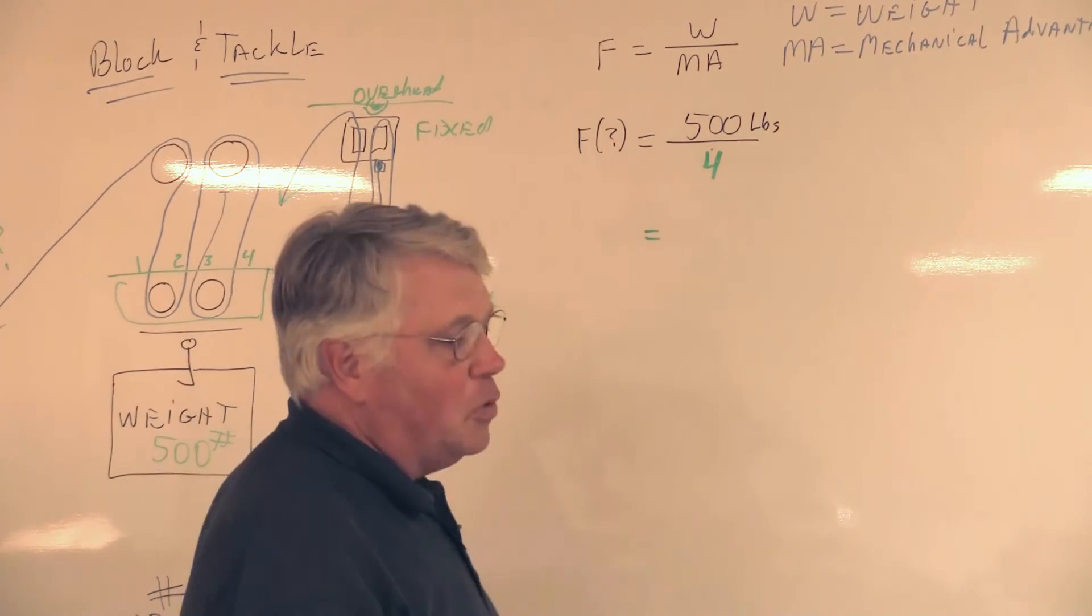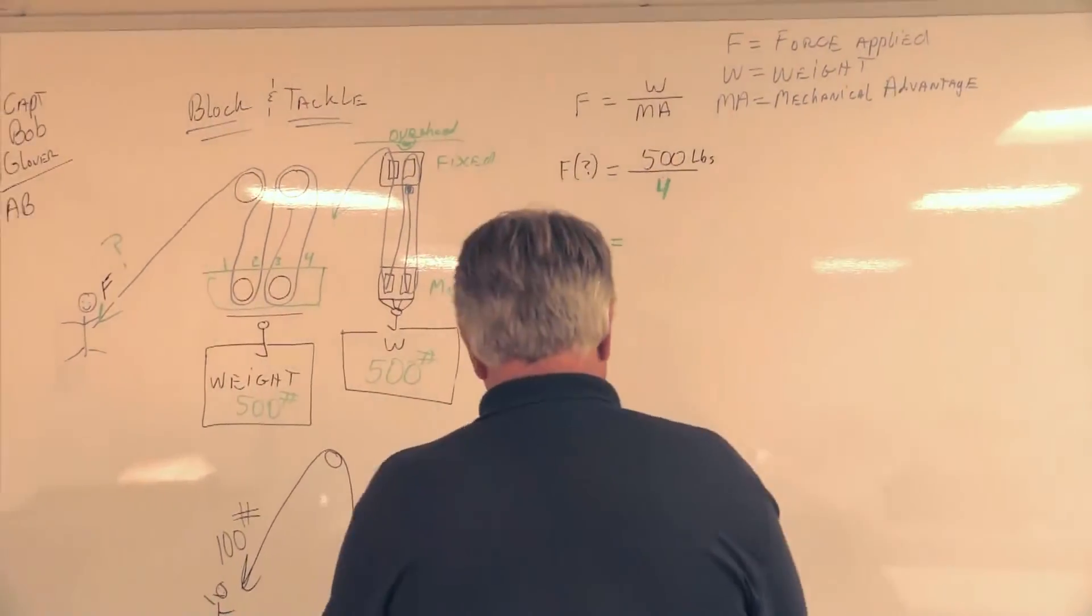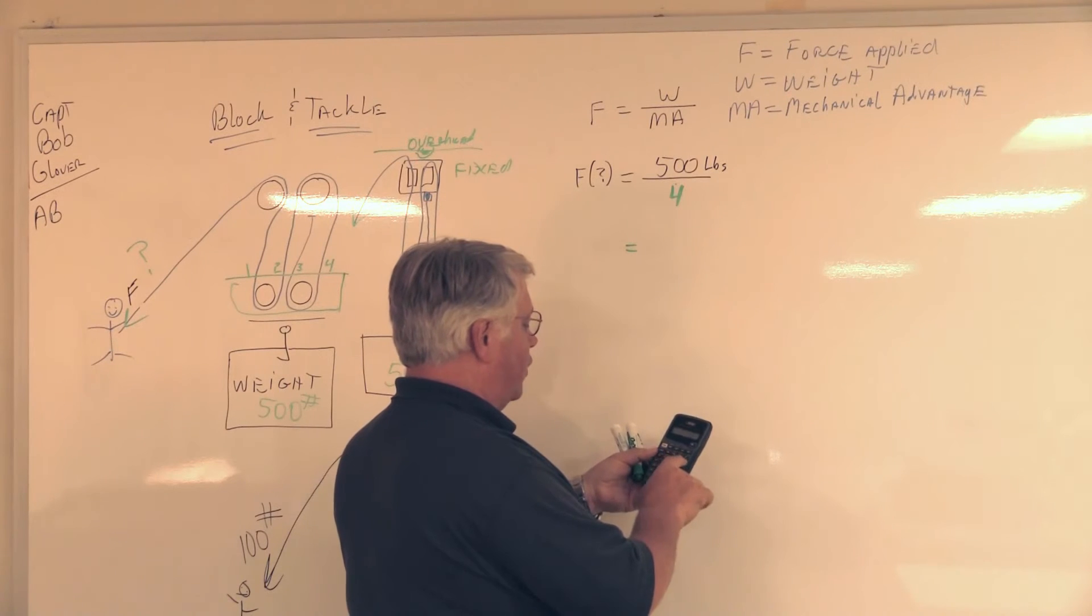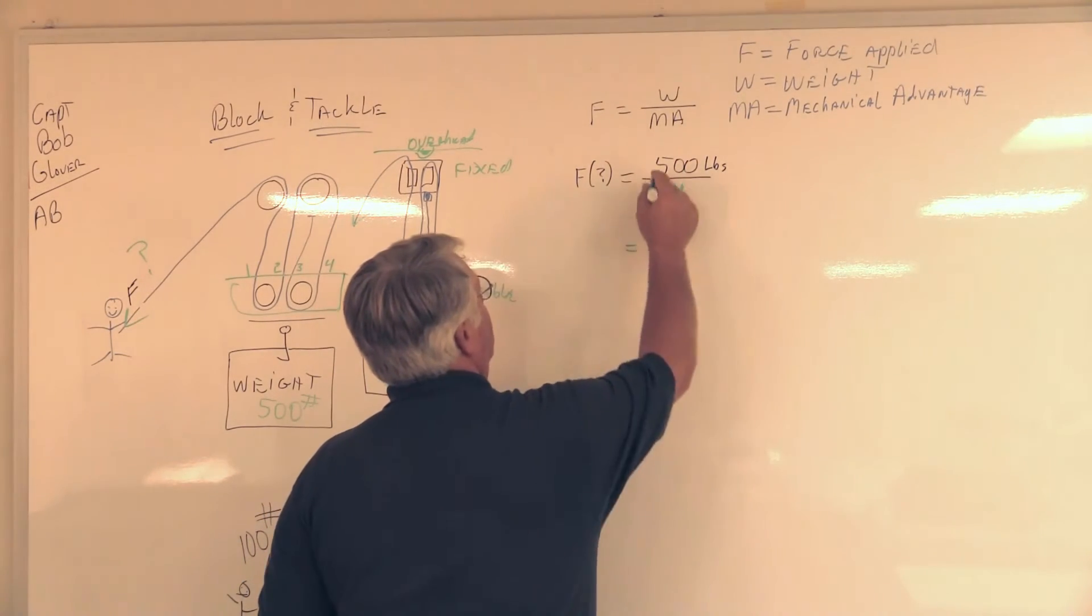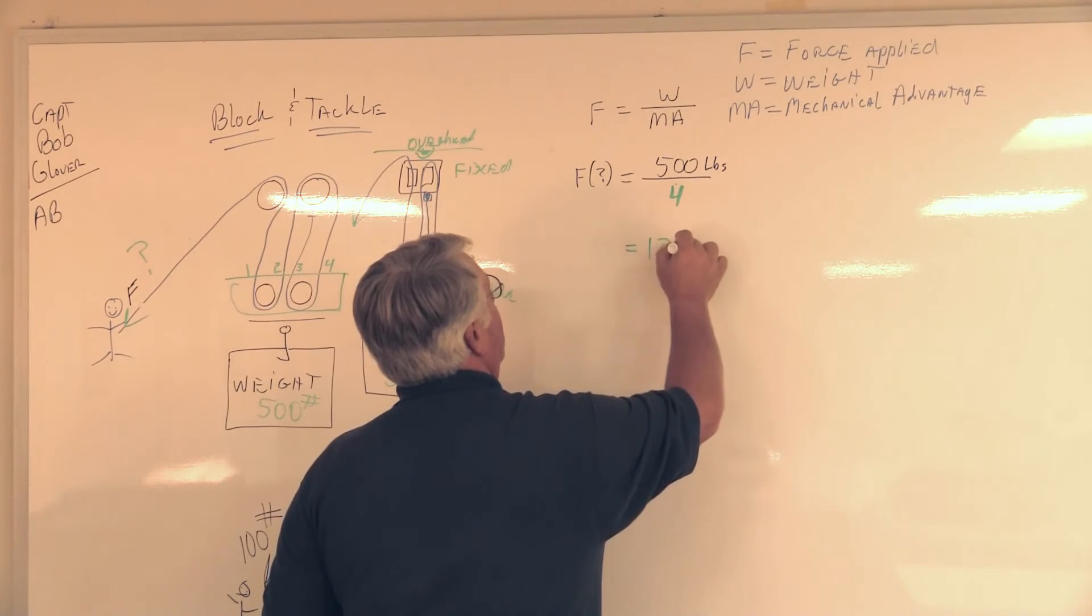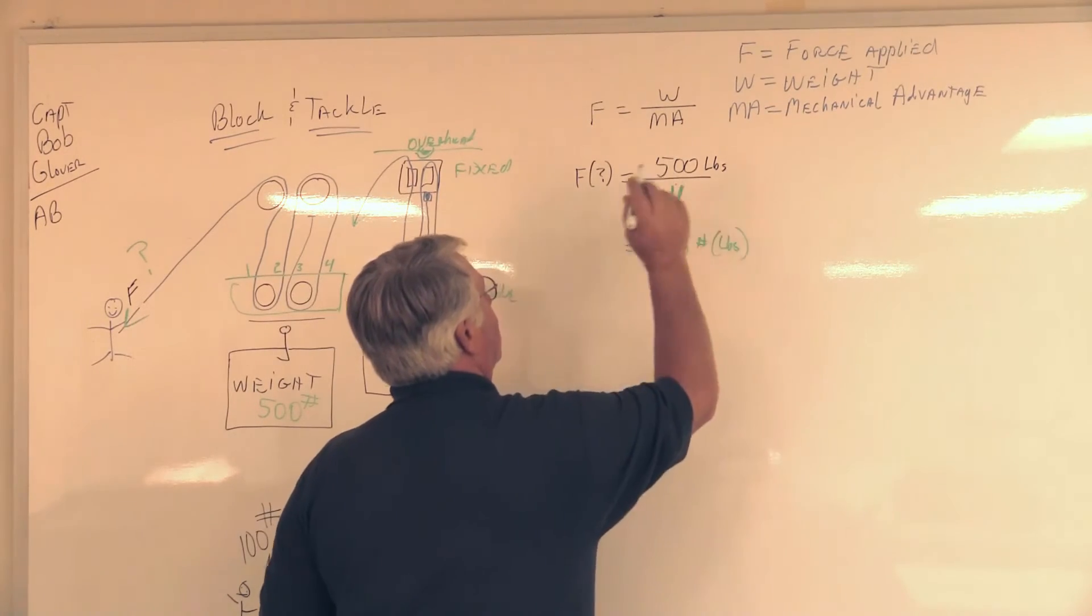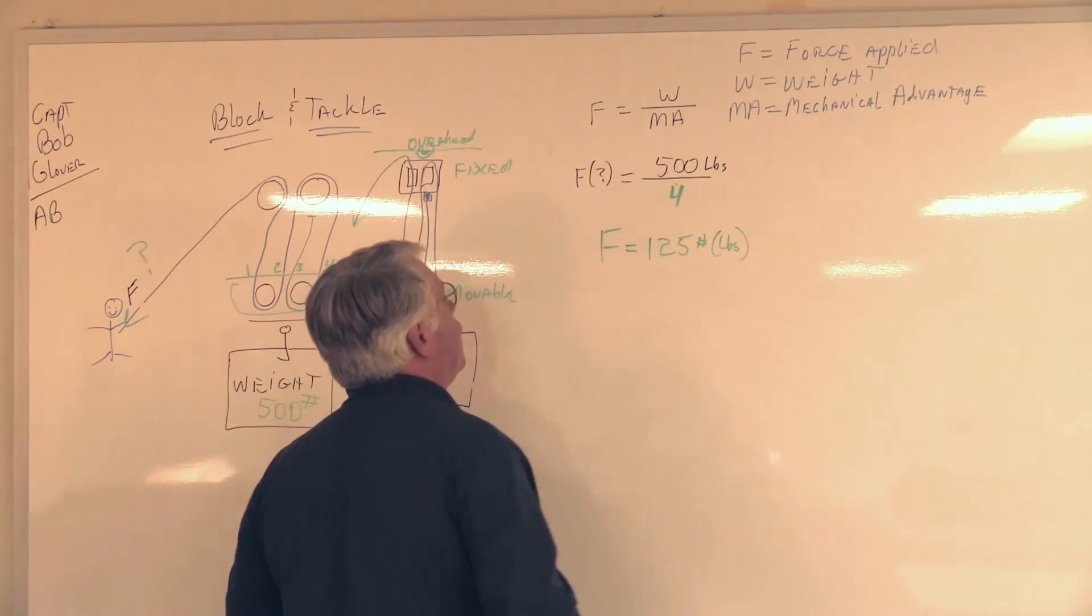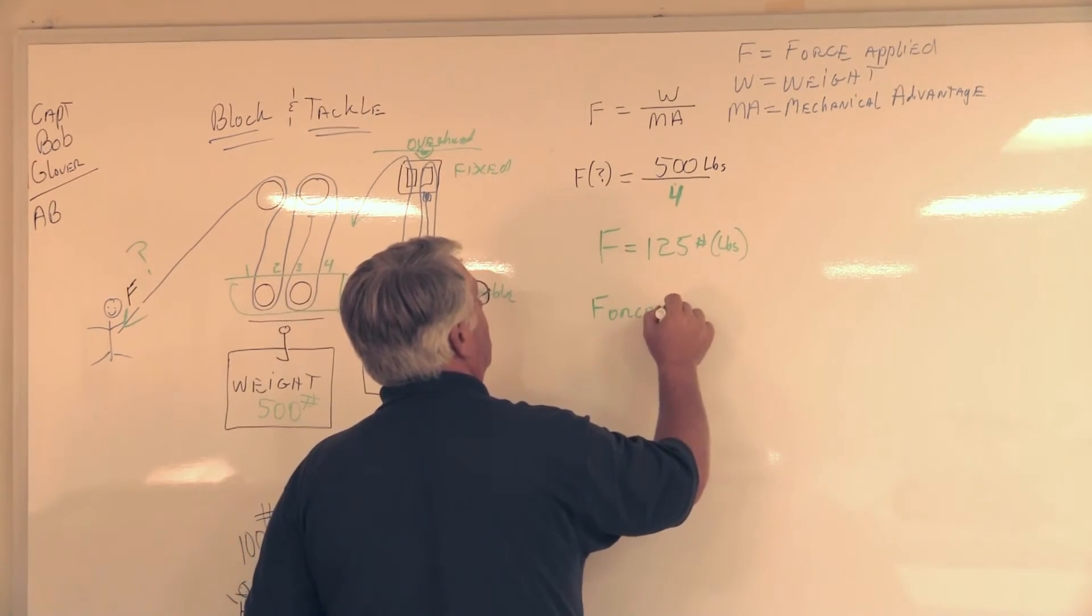Those of you who can do this in your head can do that, or we can simply take our calculator. We're going to punch in 500, divide that by the number four, then hit equals. If you did it in your head, you would have come out with 125. When I divided 500 by four, I came out with 125 pounds. For those of you who don't have gray hair, that's hashtag - a whole different meaning in today's world. F is the force, and the amount of force I have to apply is 125 pounds.